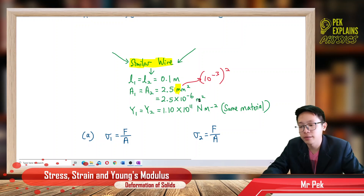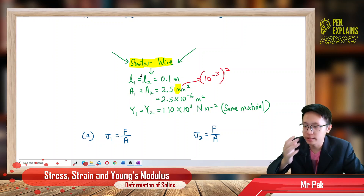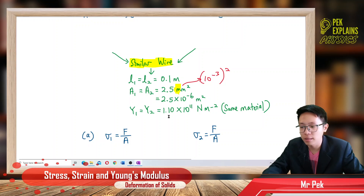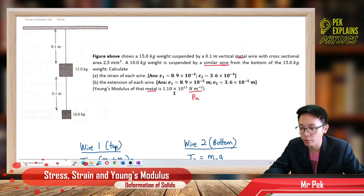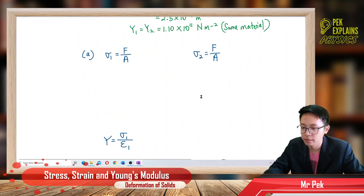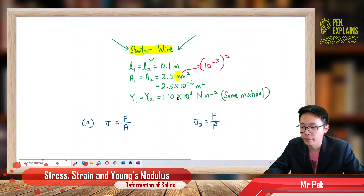So always change to SI units first. The area for both wires is the same, 2.5 × 10⁻⁶ meter squared, because it is a similar wire. And because it is a similar wire, the material is also the same, so they have the same Young's modulus of 1.1 × 10¹¹. So: same length, same area, same Young's modulus — similar wire.